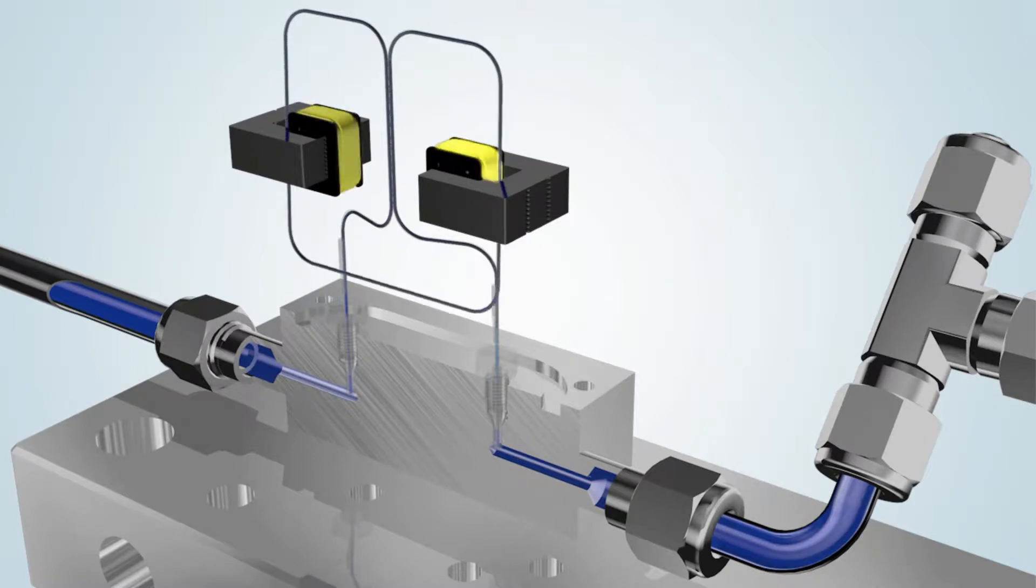All Coriolis instruments are equipped with a sensor tube, which can be used to measure both gases and liquids extremely accurately.